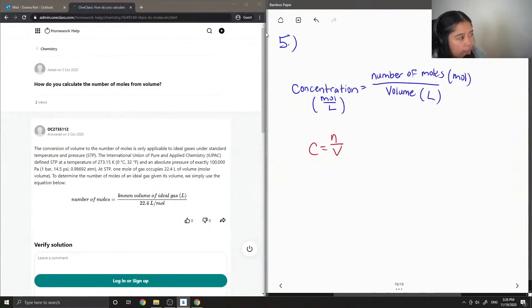So if we are given volume and we need to calculate the number of moles, we would simply just rearrange this equation to get number of moles is equal to concentration times volume.